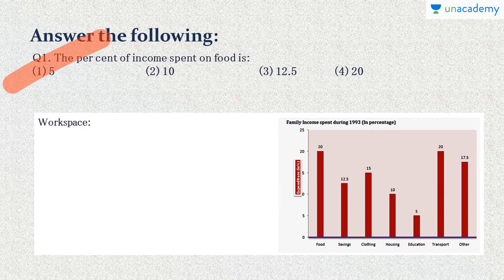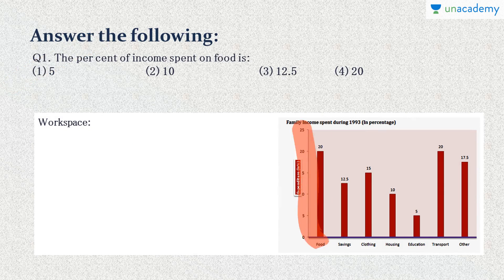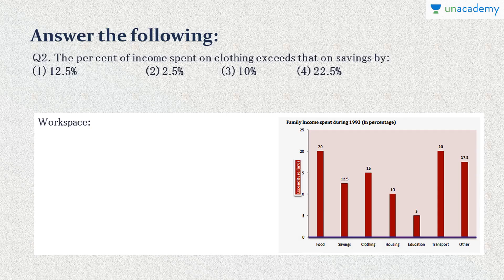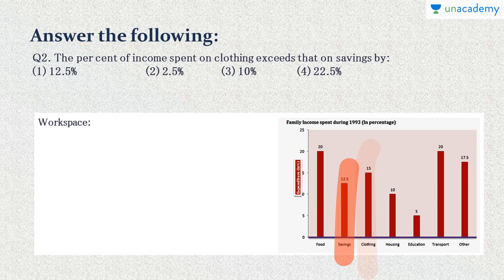Question 1: The percent of income spent on food — we can find it from the graph; since they've asked it in percentage, the answer is simply 20%. Option 4. Question 2: The percent of income spent on clothing exceeds that on savings by — clothing is 15% and savings is 12.5%, so the difference is 15 − 12.5 = 2.5%. Option 2.